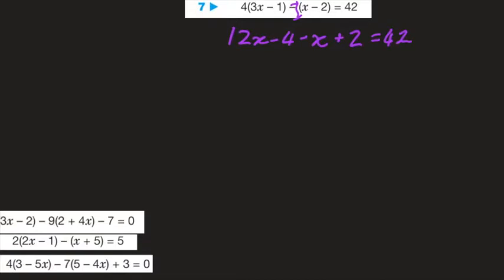This is a very important sum: 12x minus x is 11x, minus 4 plus 2 is minus 2, equals 42. Adding 2 to both sides, 11x equals 44, and x is equal to 4. Fabulous.